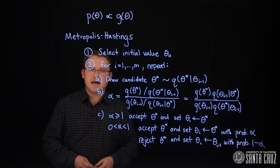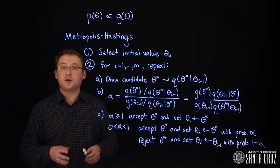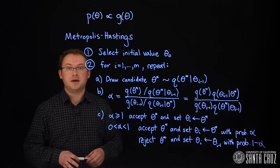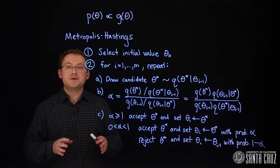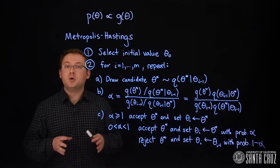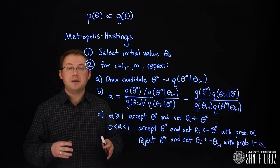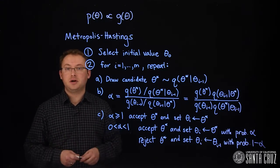As we'll see in coming examples, a high acceptance rate for random walk Metropolis-Hastings samplers is not a good thing. If the random walk is taking too small of steps, it will accept candidates often, but will take a very long time to fully explore the posterior distribution.